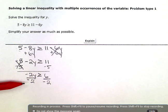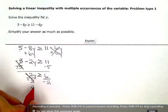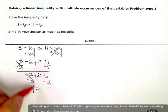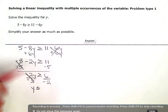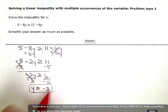But, here, I'm dividing by a negative number. So, I need to flip my sign when I simplify. 6 divided by negative 2 is negative 3. So, my final answer is y is less than or equal to negative 3.